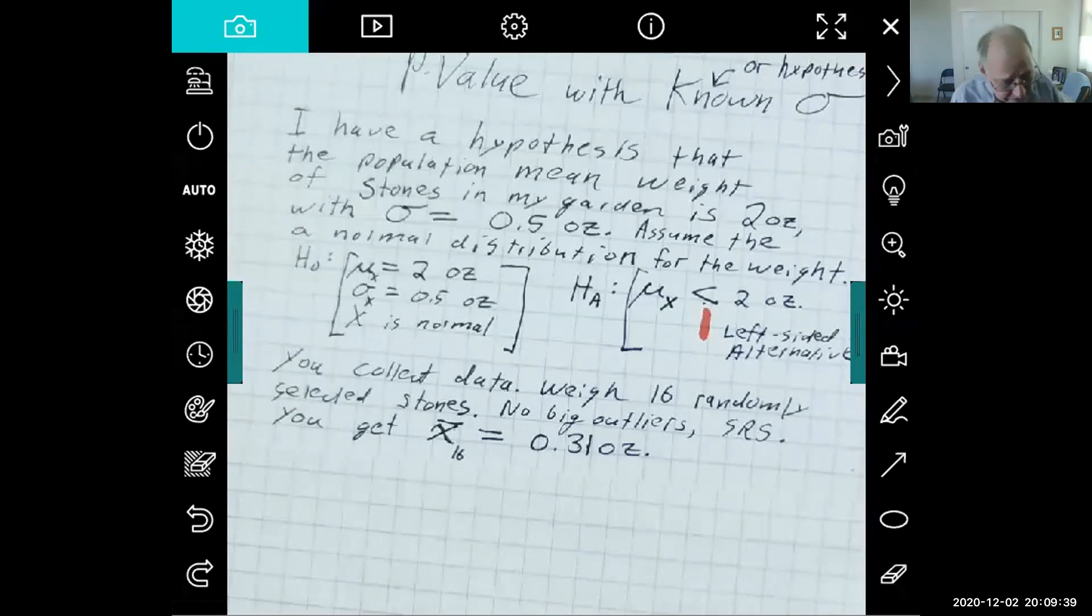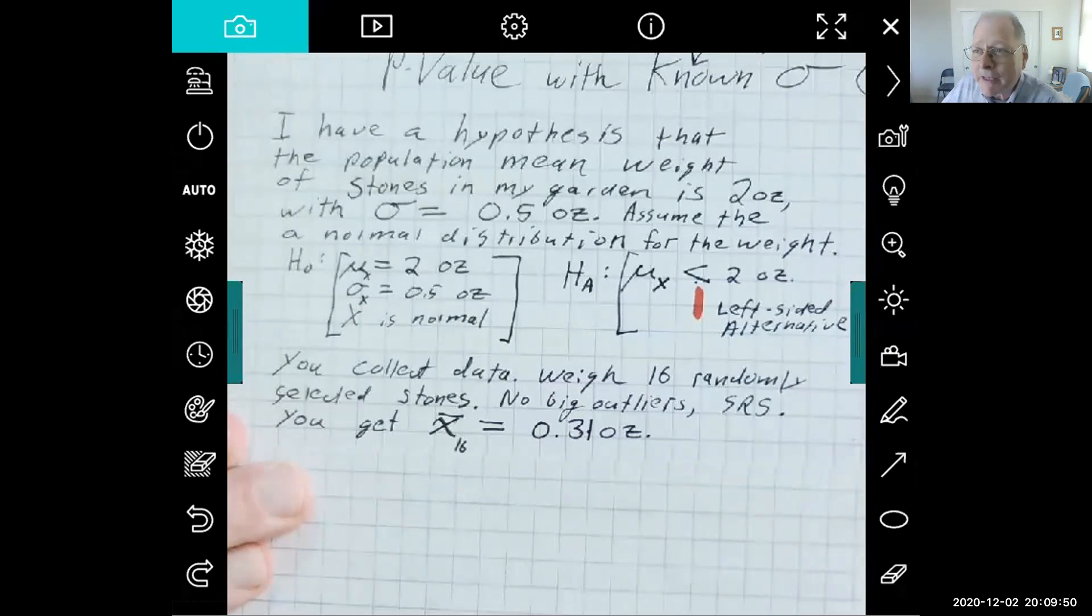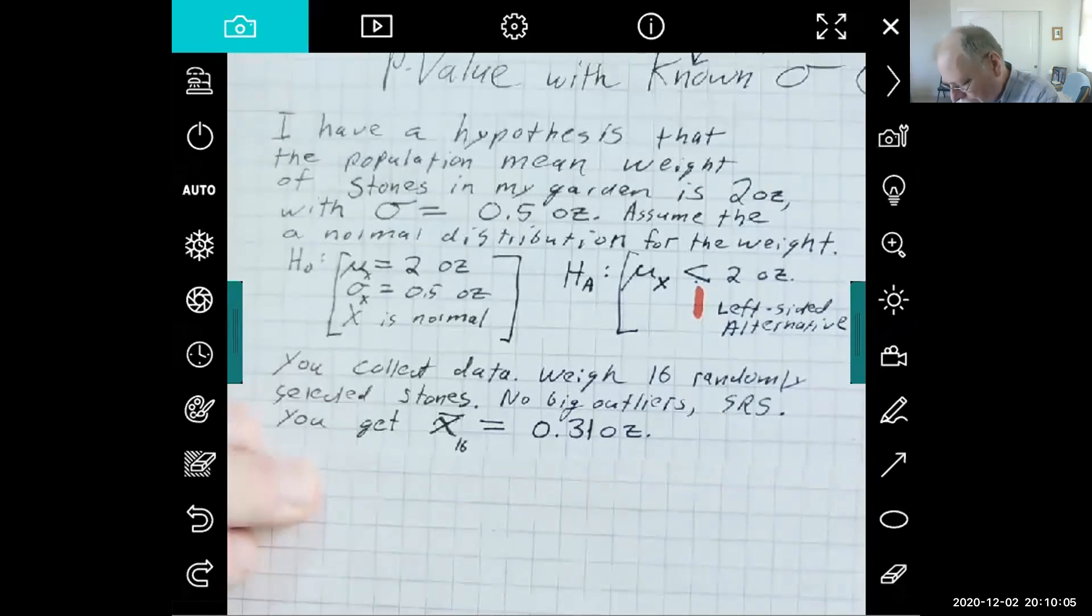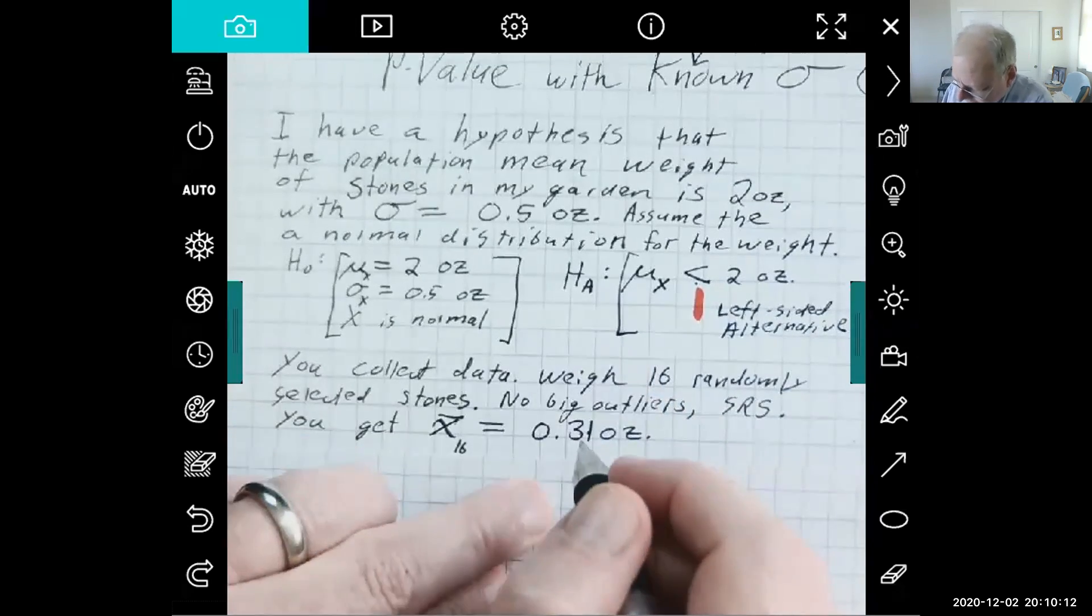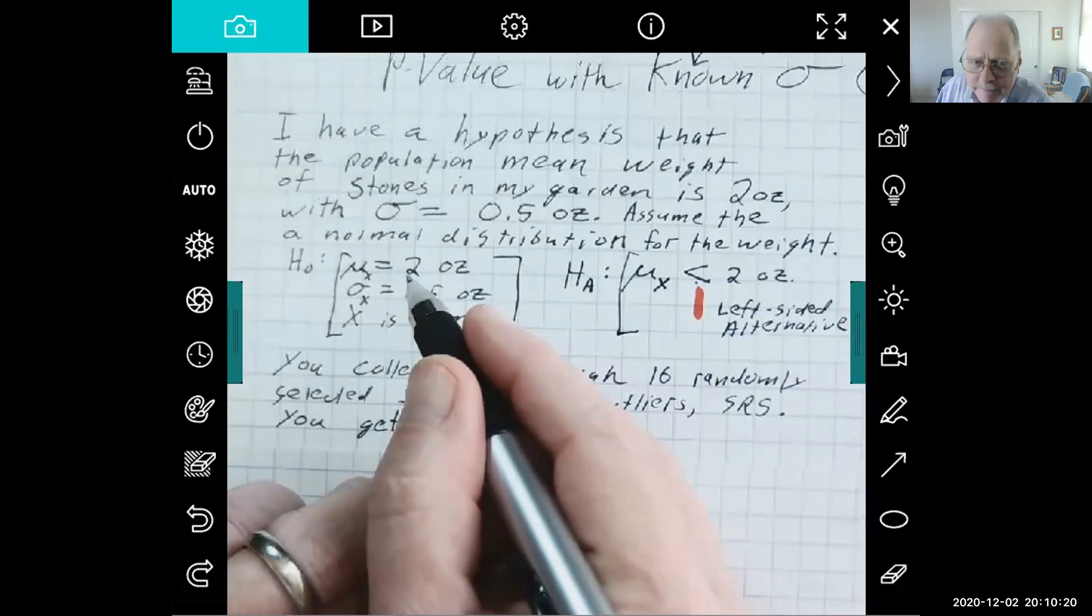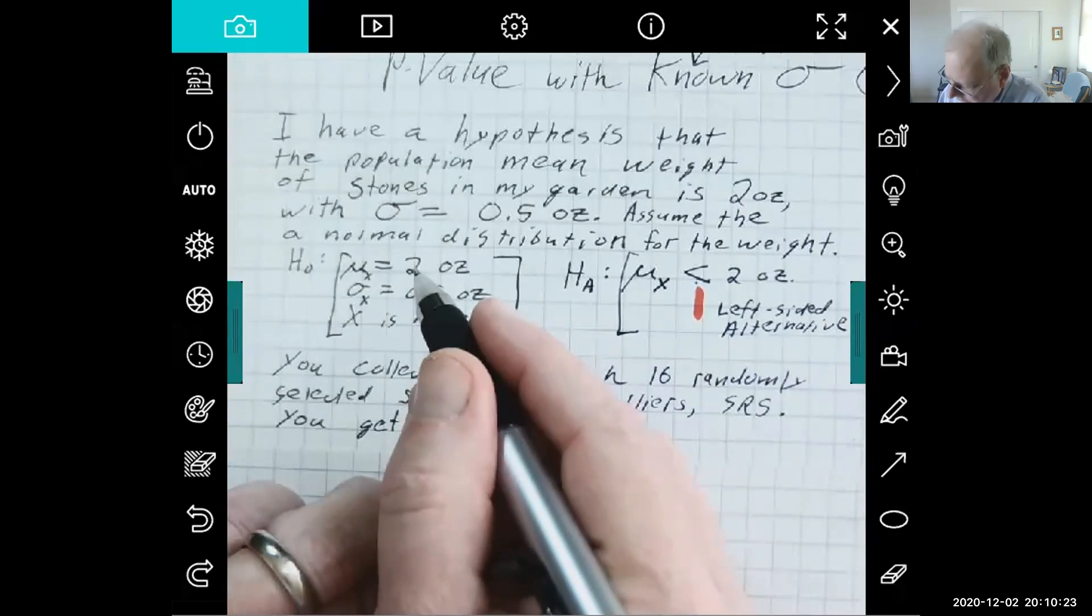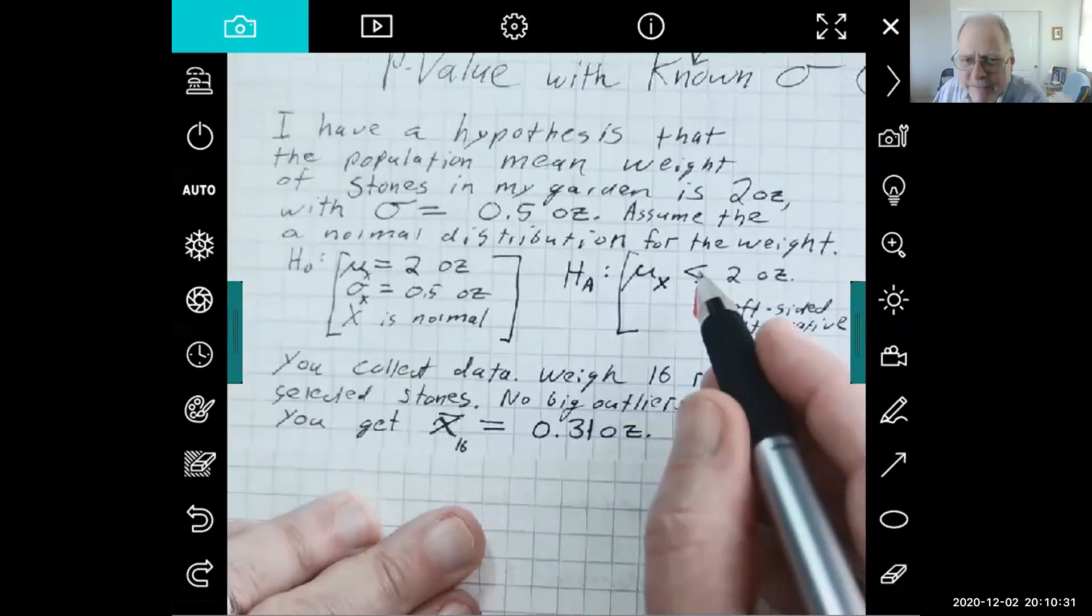So what happens is you say you've got evidence against my hypothesis, and I say, maybe you just got lucky. You only picked up 16 stones; there's thousands of stones out there. Maybe if you went out tomorrow and you got a different sample, maybe you'd see my 2 ounces is about right. Okay, and so your argument has to be, well wait, you know, that's not likely. You have to convince me it's not likely you'd get such a small sample mean if the population mean was really 2 ounces—such a small sample mean, small because of the less than here.